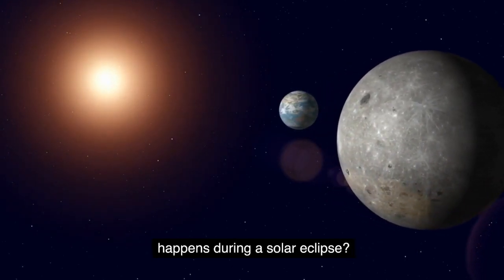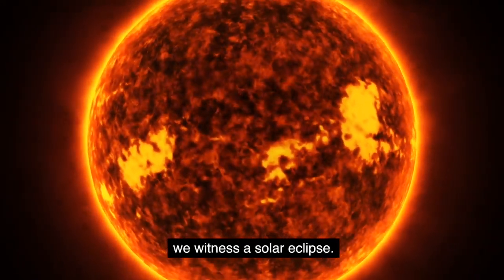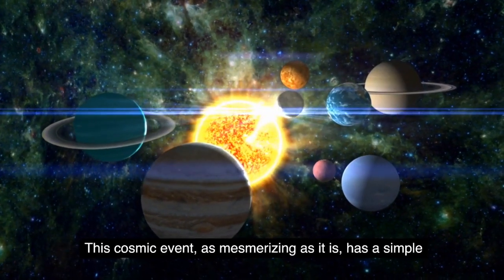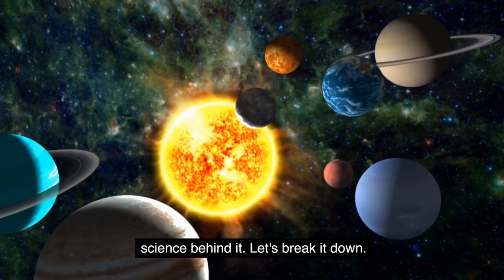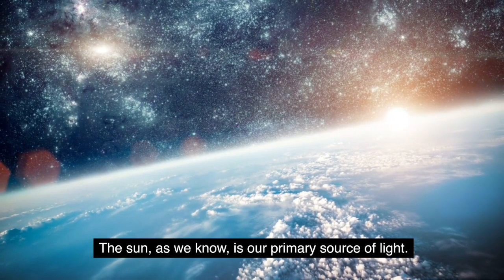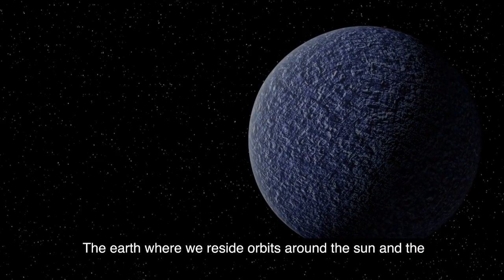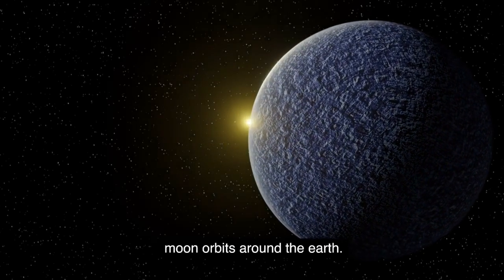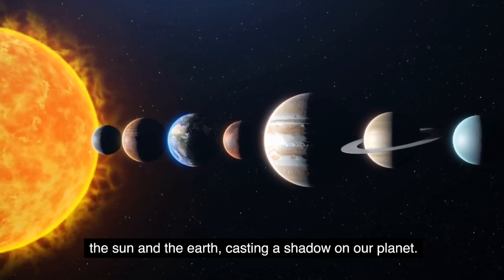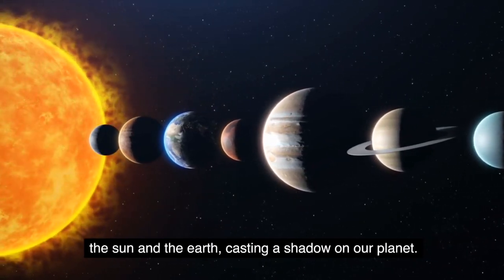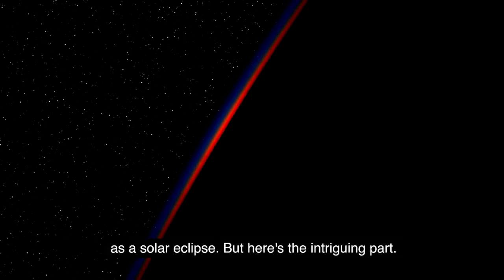But what exactly happens during a solar eclipse? When the moon passes between the sun and the Earth, we witness a solar eclipse. This cosmic event, as mesmerizing as it is, has a simple science behind it. Let's break it down. The sun, as we know, is our primary source of light. The Earth where we reside orbits around the sun, and the moon orbits around the Earth. During a solar eclipse, the moon comes directly between the sun and the Earth, casting a shadow on our planet. This shadow creates a temporary darkness which we perceive as a solar eclipse.